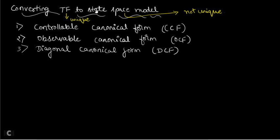The answer of the state space model is not unique — it changes. You can get three different answers: controllable canonical form, observable canonical form, or diagonal canonical form. Instead of studying the general meaning of each, we will take one problem where a transfer function is given and convert it into all three forms of state space model.